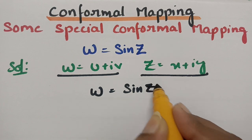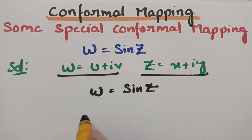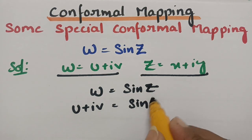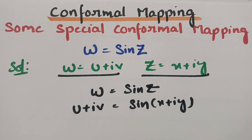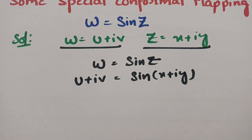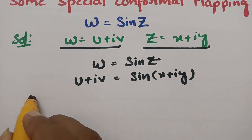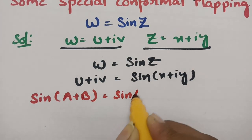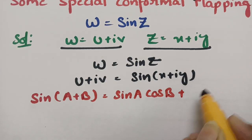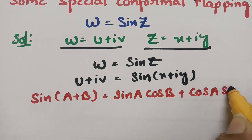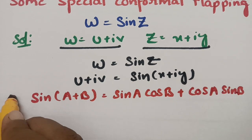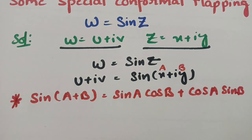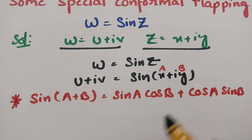Since w = sin(z), we write u + iv = sin(x + iy). Using the expansion sin(a + b) = sin(a)cos(b) + cos(a)sin(b), we consider x as 'a' and iy as 'b', so this is of the form sin(a + b).